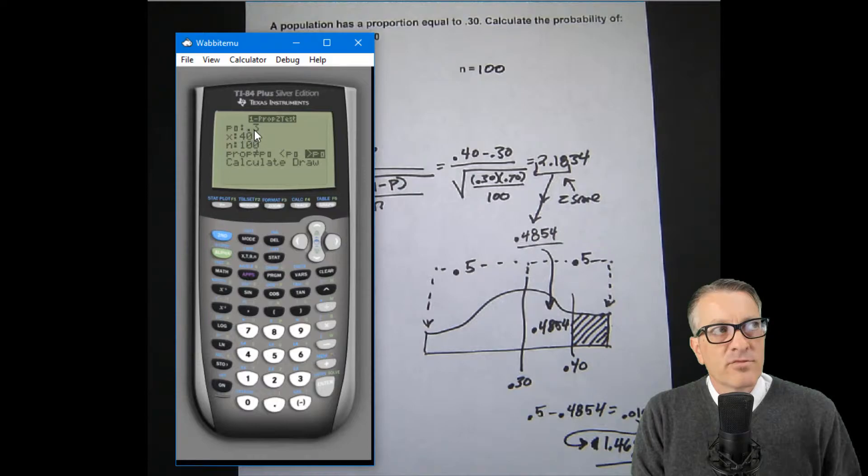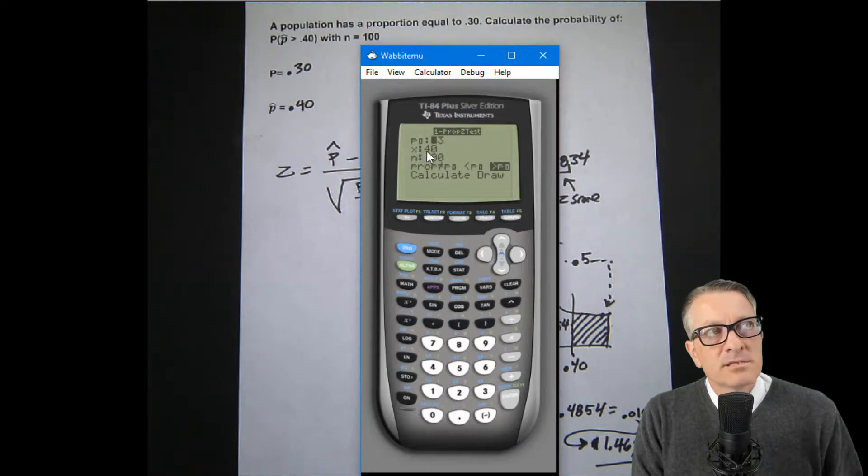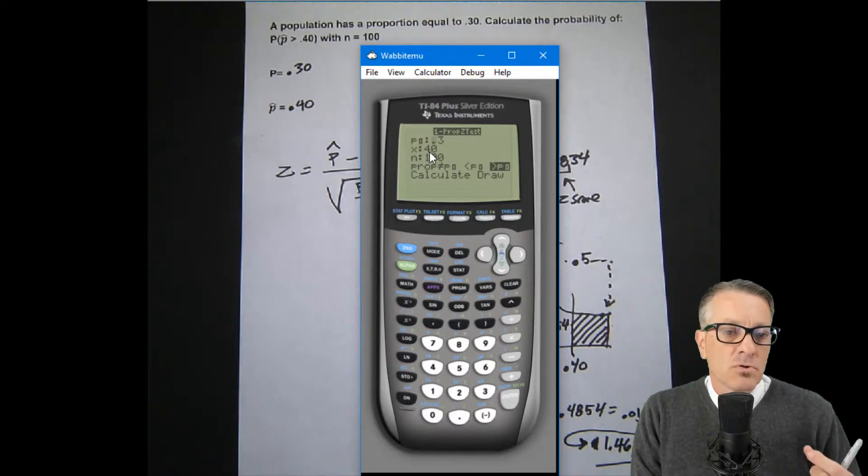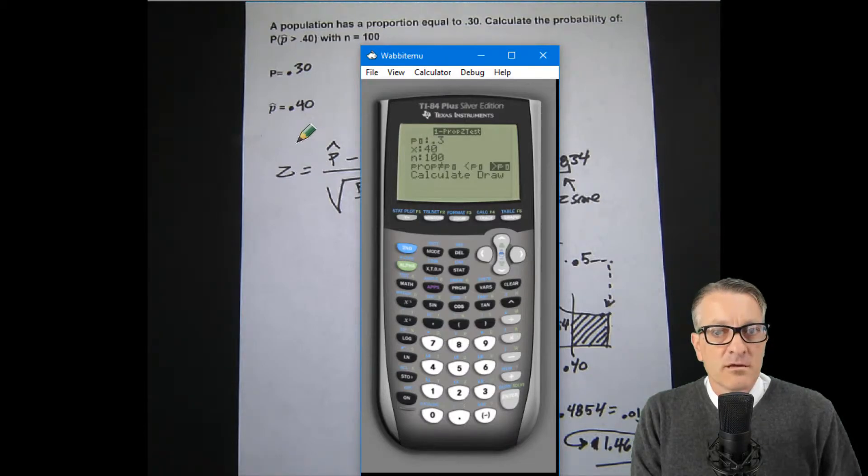We put in the population proportion parameter, 0.3. That of course is right here, 0.3. Then we put in, in this case we're not putting in 0.40, we're putting in the actual number of successes. So if we're looking for the number of successes of the proportion of 0.40 in 100 actual samples, the assumption is it would be 40.